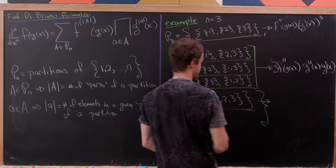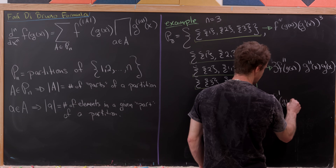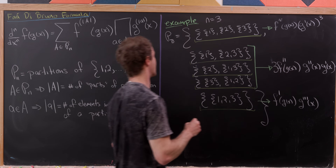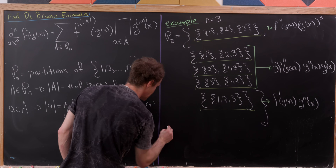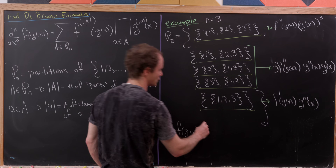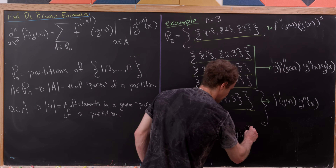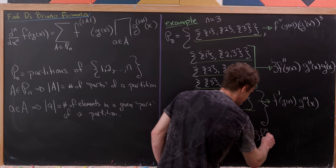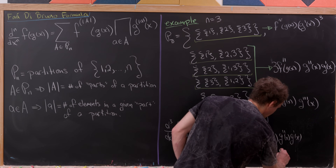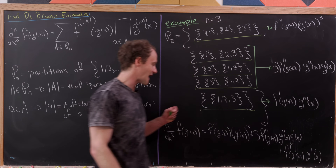For the last partition {1,2,3} there is a single part, so we get f′(g(x)). That single part has three elements, giving g‴(x). Putting it all together, the third derivative of f(g(x)) equals f‴(g(x))·[g′(x)]³ + 3·f″(g(x))·g″(x)·g′(x) + f′(g(x))·g‴(x).